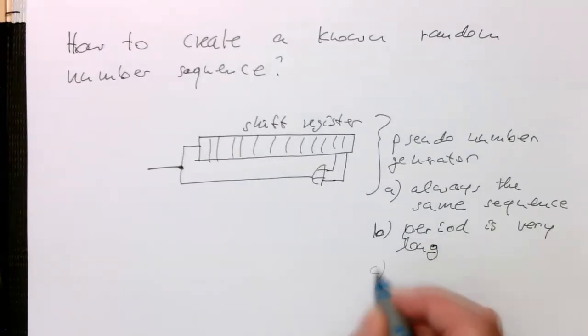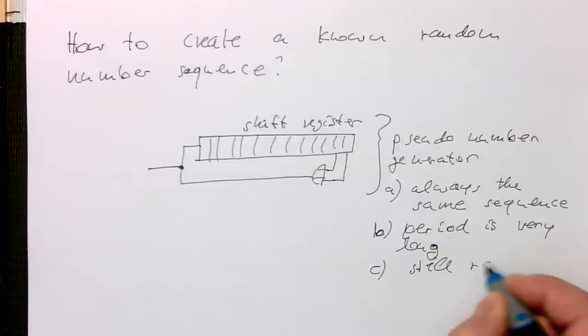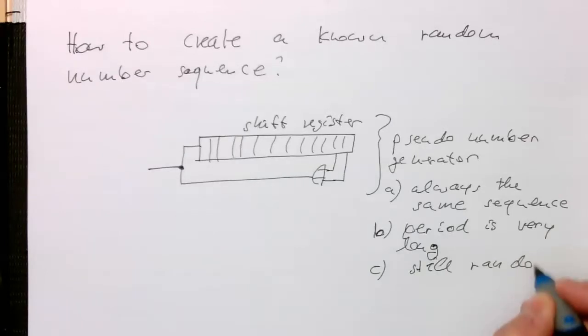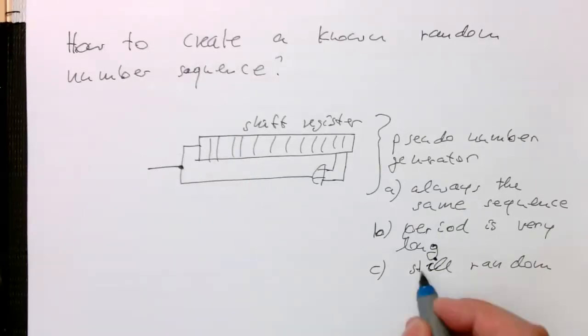But the output is still random. So this means that the cross correlation between samples is probably very, very low. So it's still random.